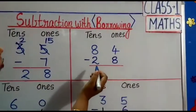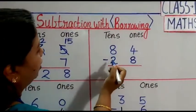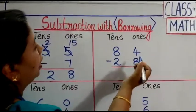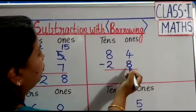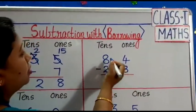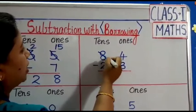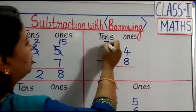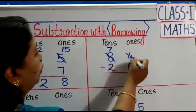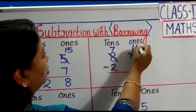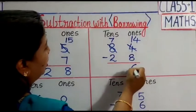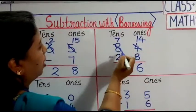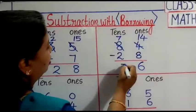Now 2nd one. 84 minus 28. Again 4 is a smaller number, 8 is a bigger number. So we will borrow 1 tenths from 8 tenths. 8 becomes 7, 4 becomes 14. 14 minus 8 is 6. 7 minus 2 is 5.